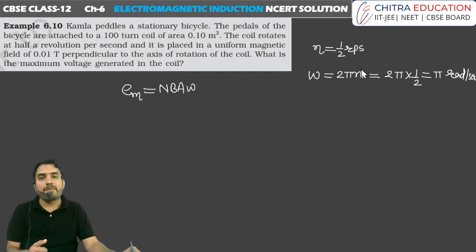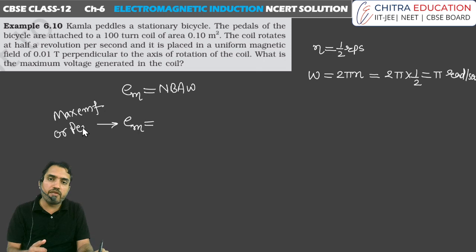So here we have the maximum EMF, which is the peak EMF. We have the formula here: N, N here is 100 turns; B value here is 0.01; area of cross section 0.1; and omega value is π.